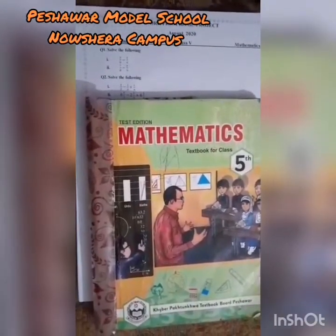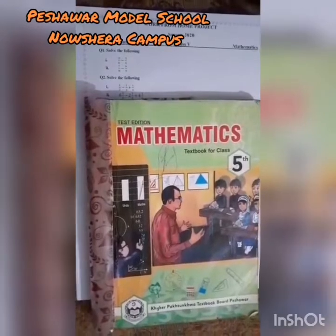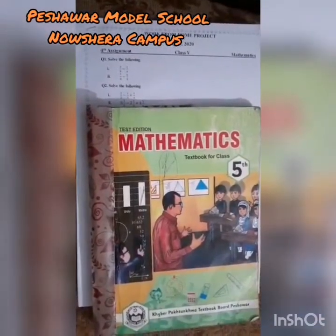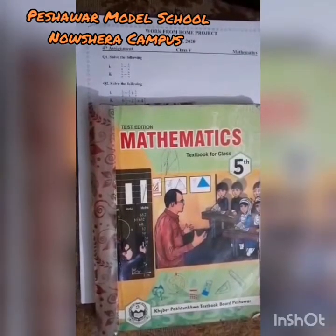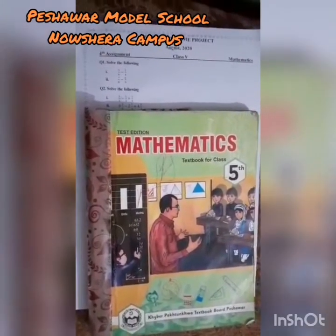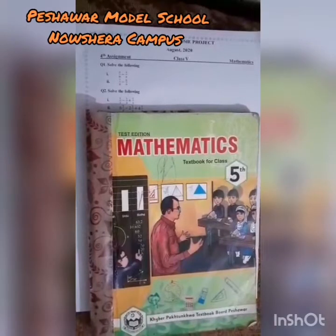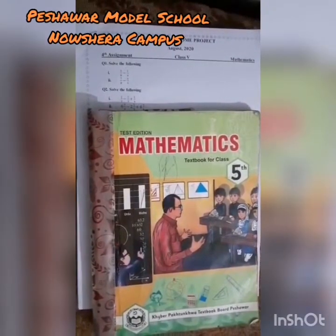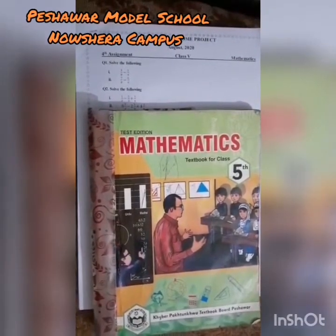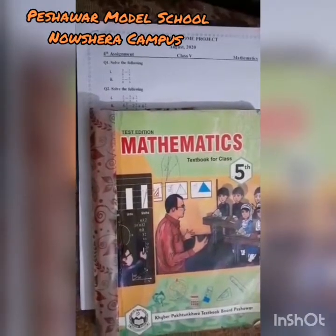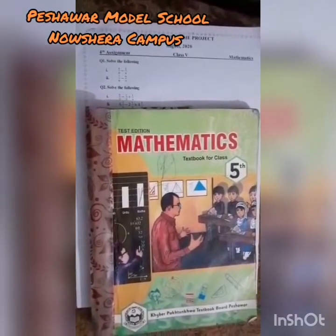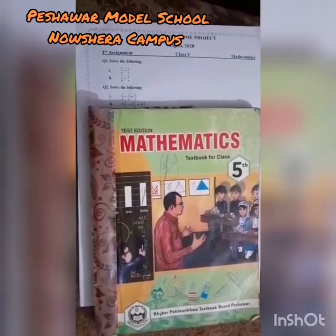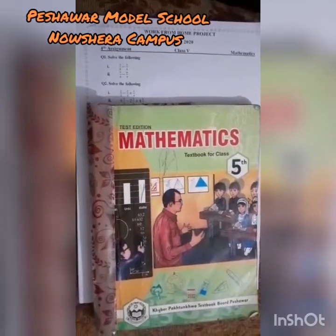Before starting, subscribe to our channel to get more new videos. Today we have discussed the summer vacation tasks, month of August, Mathematics Class 5th. Dear students, your August SVT marks is also 50. The marks of April and May SVT are included in the July assessment, and the marks of June and August SVT are included in your September assessment.